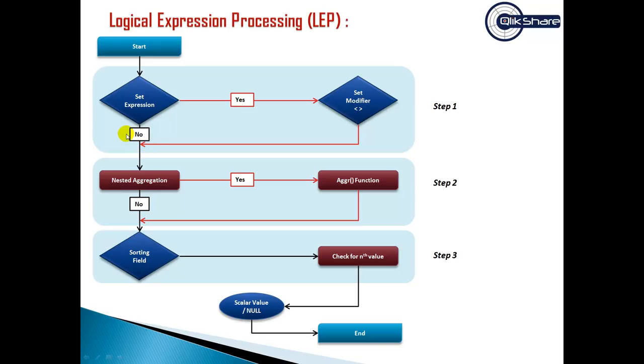In step two, it looks for nested aggregation. If there's any requirement for nested aggregation, it moves on. Let's say we're using an aggr function - it calculates the aggregation and then jumps back to output two, which is the input for step three.